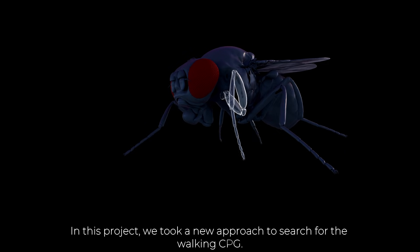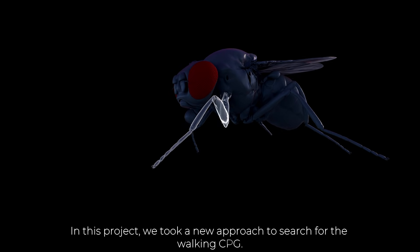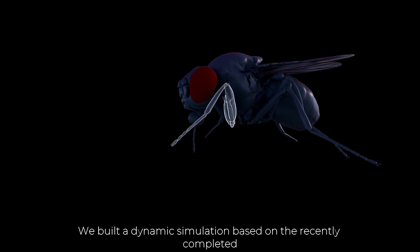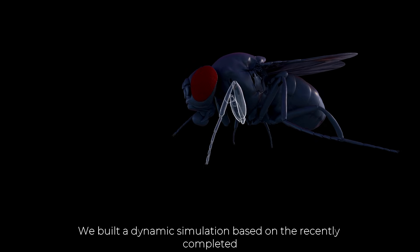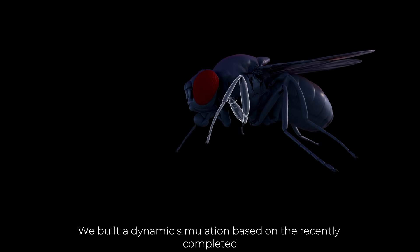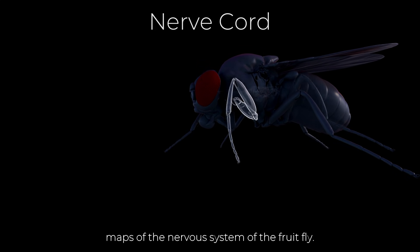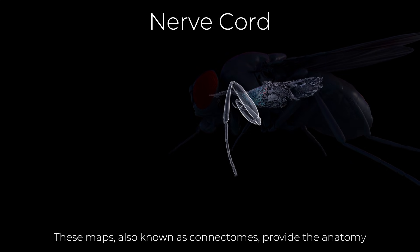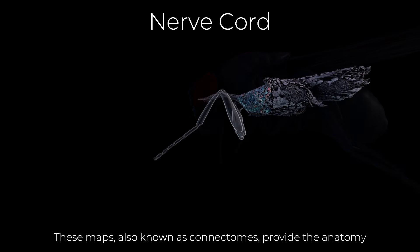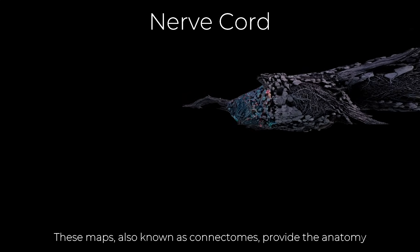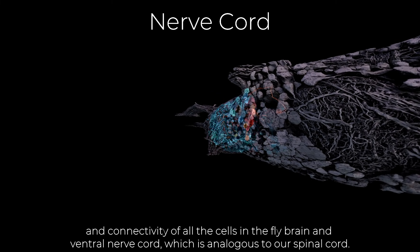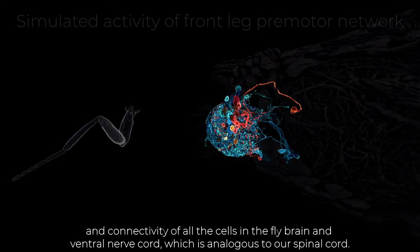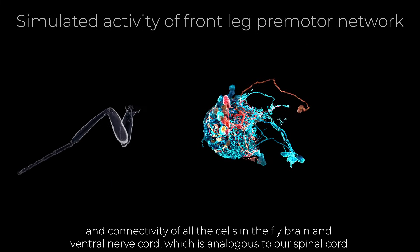In this project, we took a new approach to search for the walking CPG. We built a dynamic simulation based on the recently completed maps of the nervous system of the fruit fly. These maps, also known as connectomes, provide the anatomy and connectivity of all the cells in the fly brain and ventral nerve cord, which is analogous to our spinal cord.